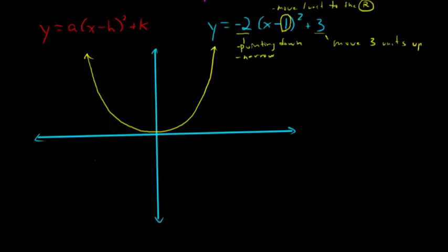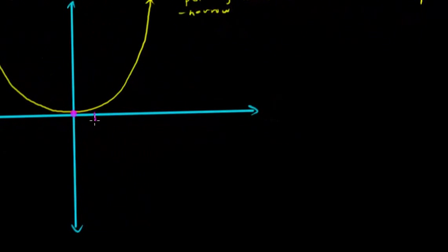Okay, so our vertex is going to be 1 unit to the right. So we're moving 1, and then it's going to be 3 units up. So 1, 2, 3, here's our vertex. And before we draw the parabola, remember that it's pointing down and it's narrower than the normal one. So we're going to have something like this.